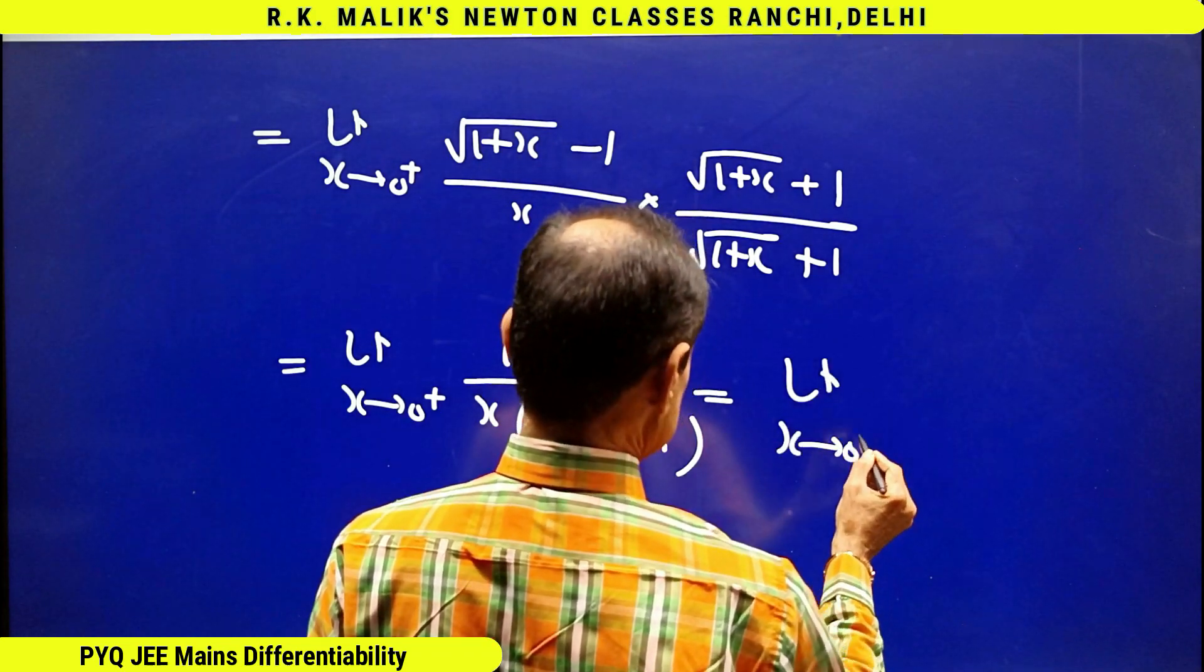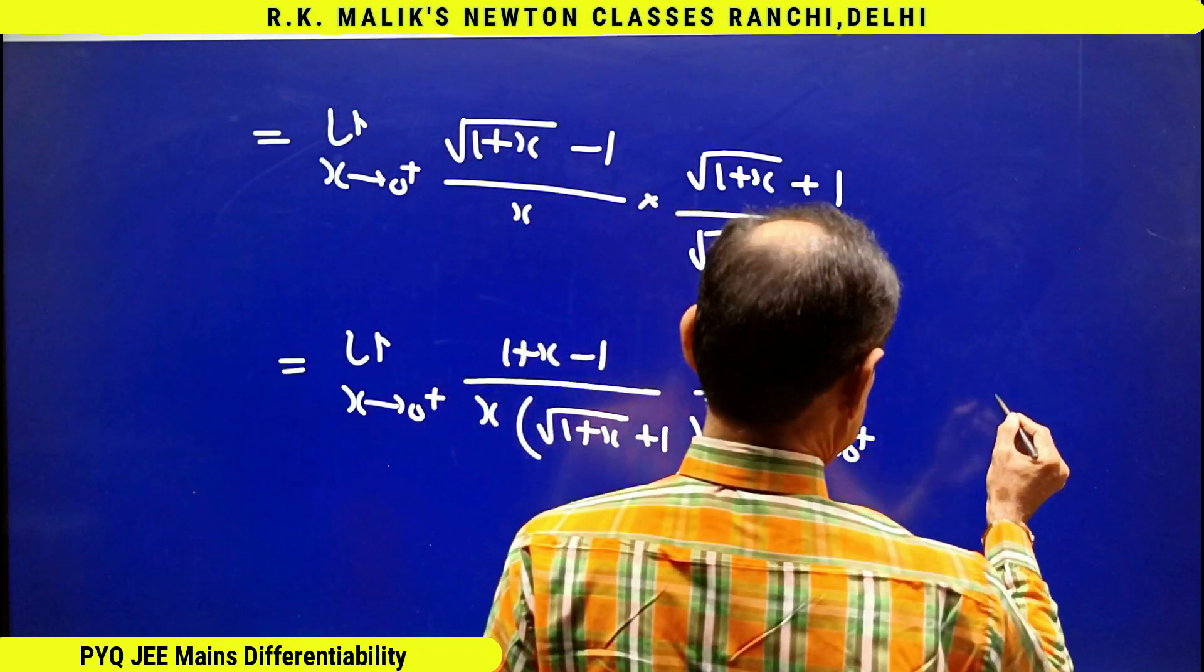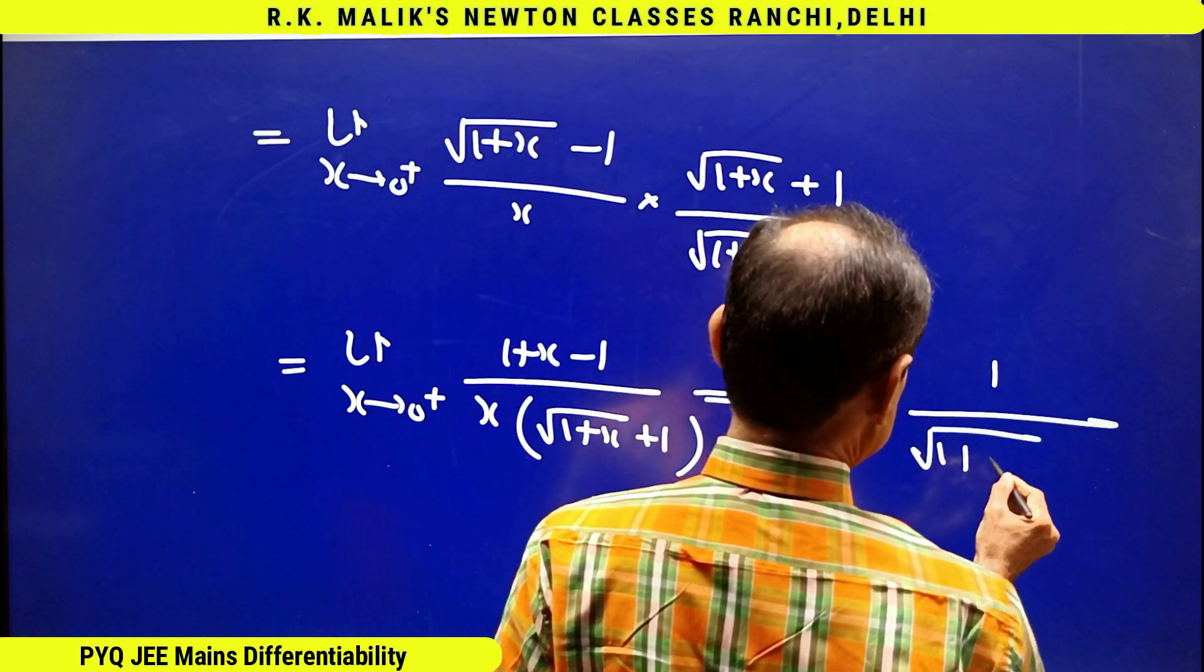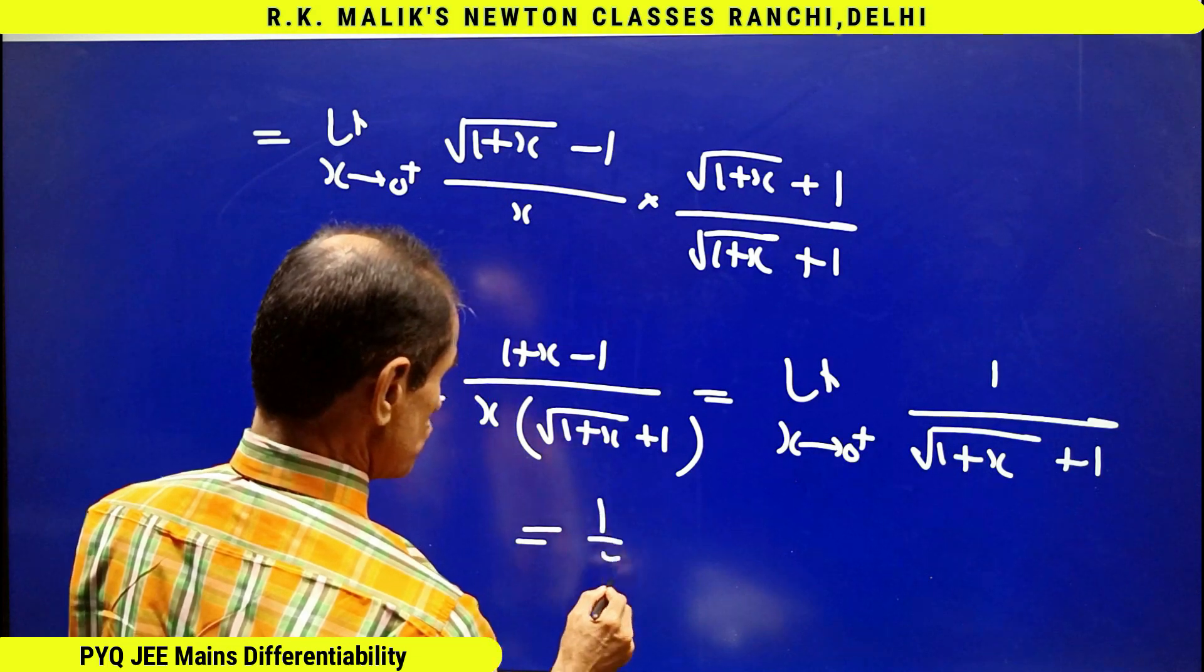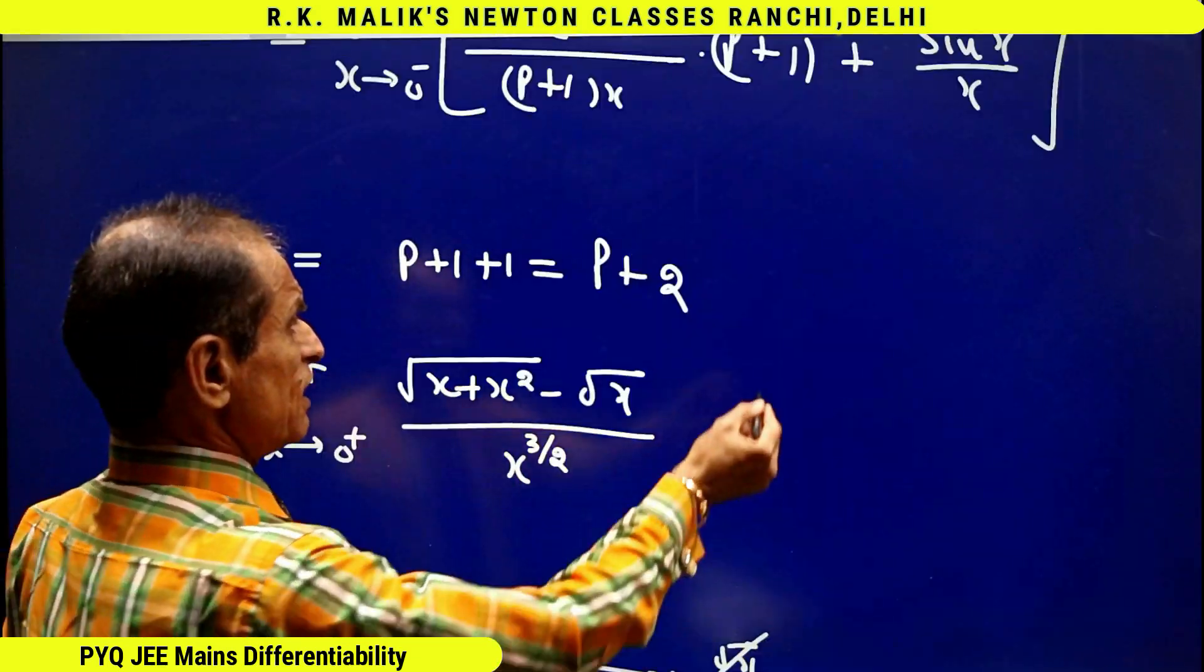x upon x times √(1+x) + 1. That is, the answer is 1/2.